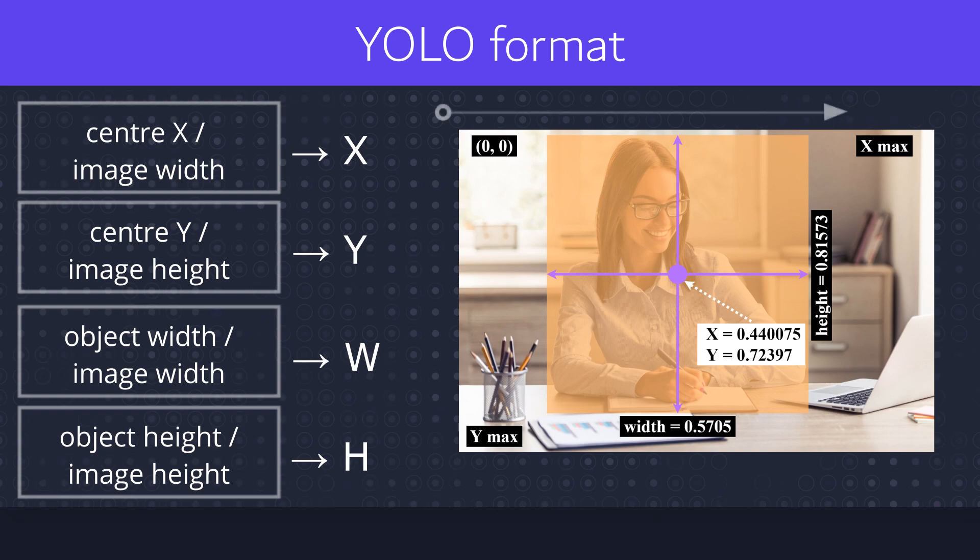Pay also attention on the x and y-axis. Top left corner is the start point that is 0,0. Top right corner is the maximum of x that is entire image width. Bottom left corner is the maximum of y that is entire image height.